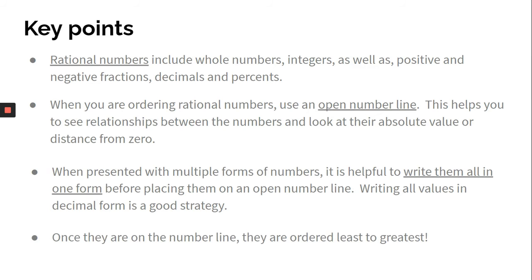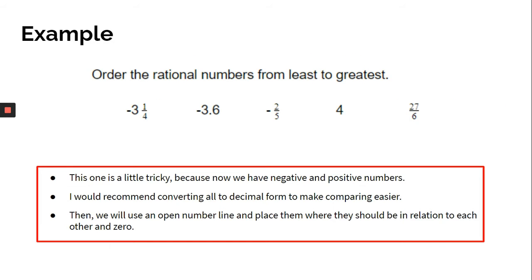Once they are on the number line, they are ordered least to greatest. Let's do an example. Order the rational numbers from least to greatest.